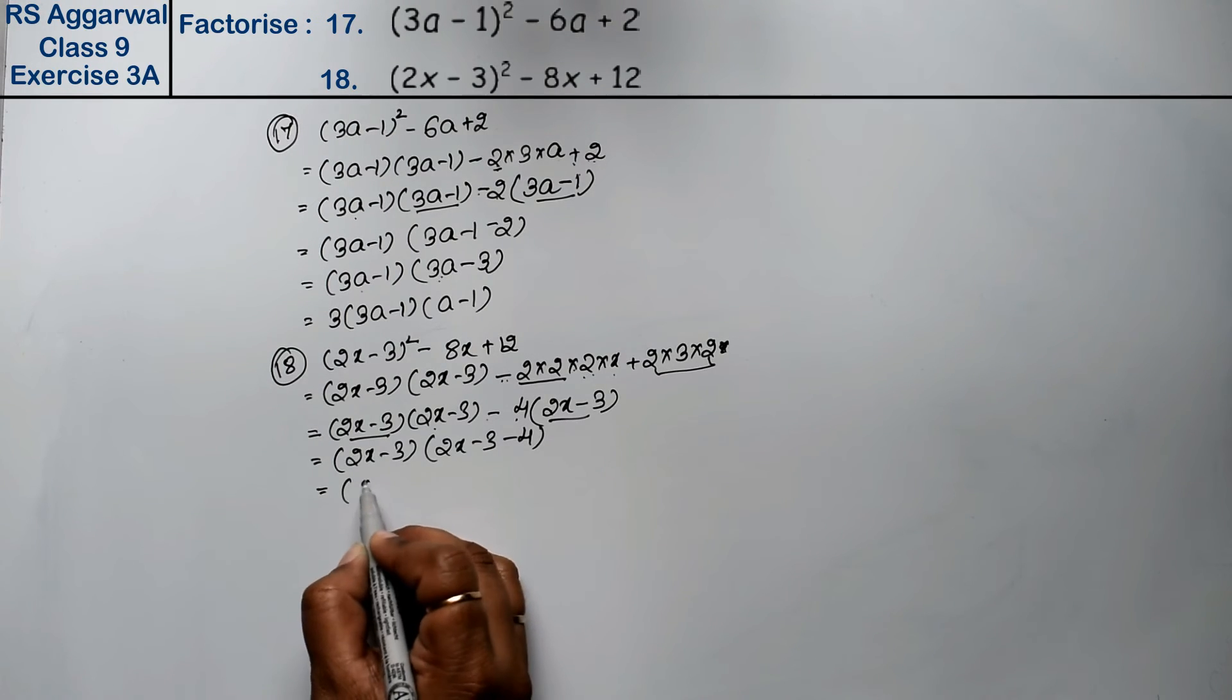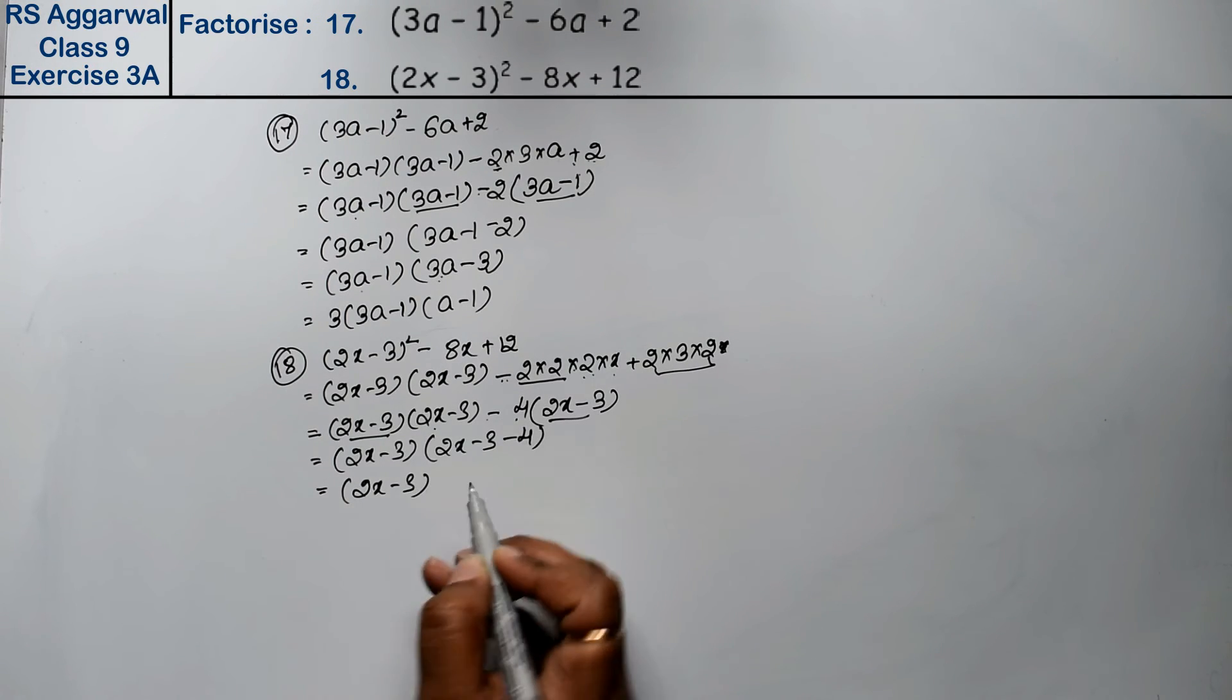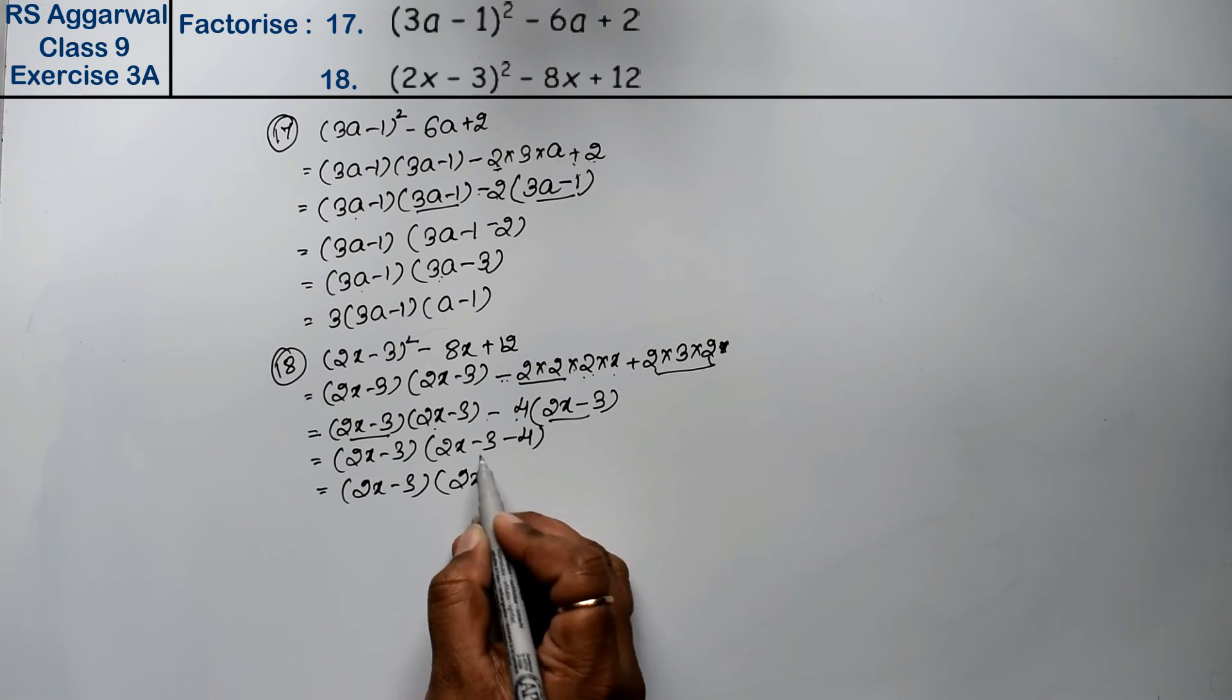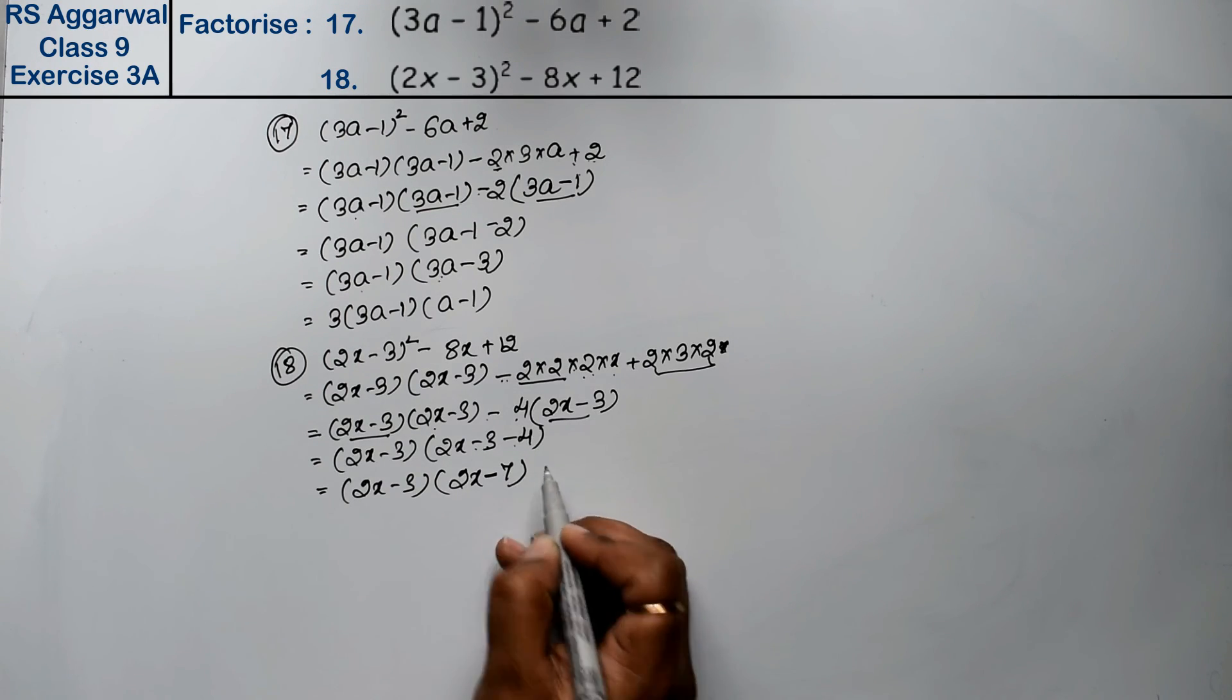Now what does this become? (2x - 3). And what does this become? 2x. Both are minus, so minus together, they add up to give 2x minus 3 minus 4, which simplifies to 2x minus 7 is the answer.